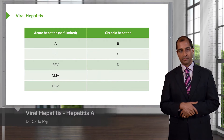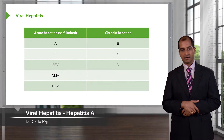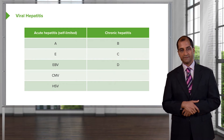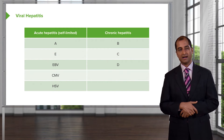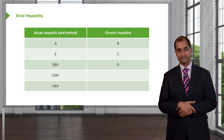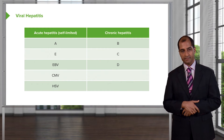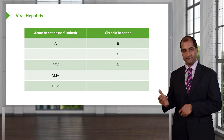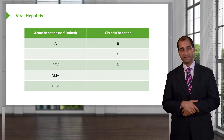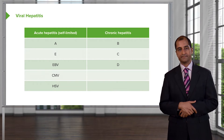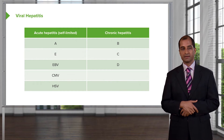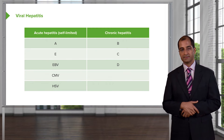Viral hepatitis — we'll go through the important causes of viral hepatitis. In general, self-limited acute hepatitis includes A and E. Viruses that usually affect the liver in an acute nature include EBV, CMV, and HSV. Chronic hepatitis deals more so with B, C, and D.